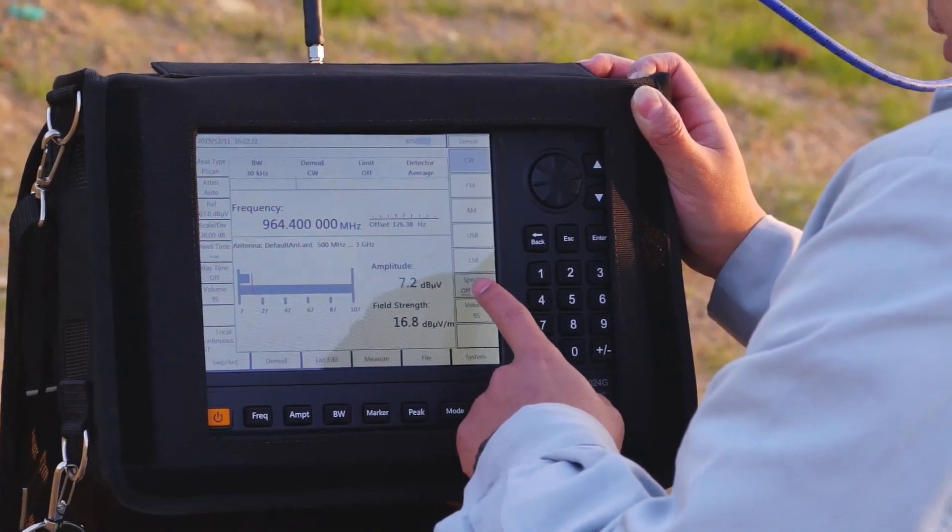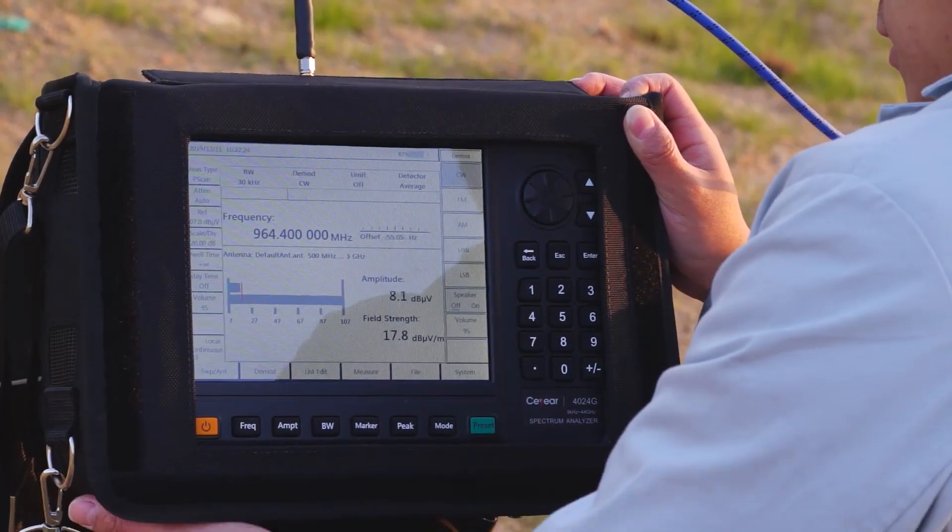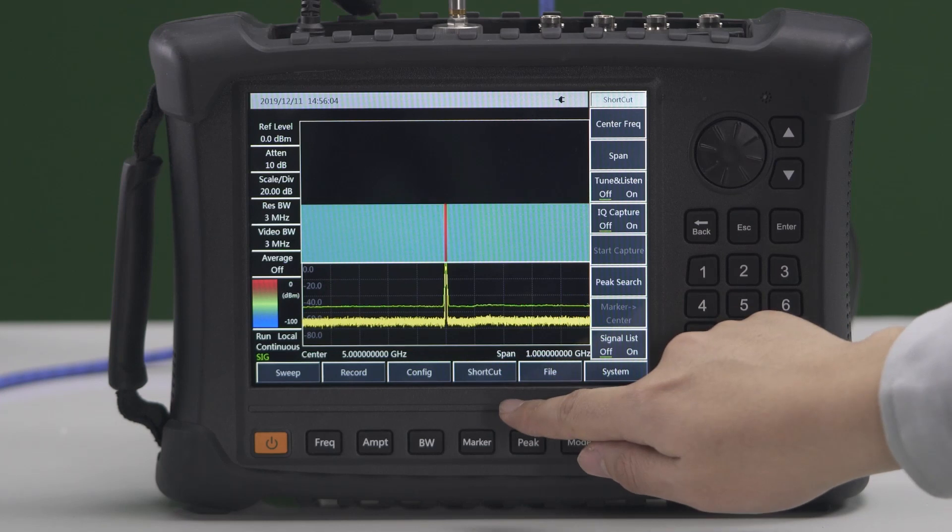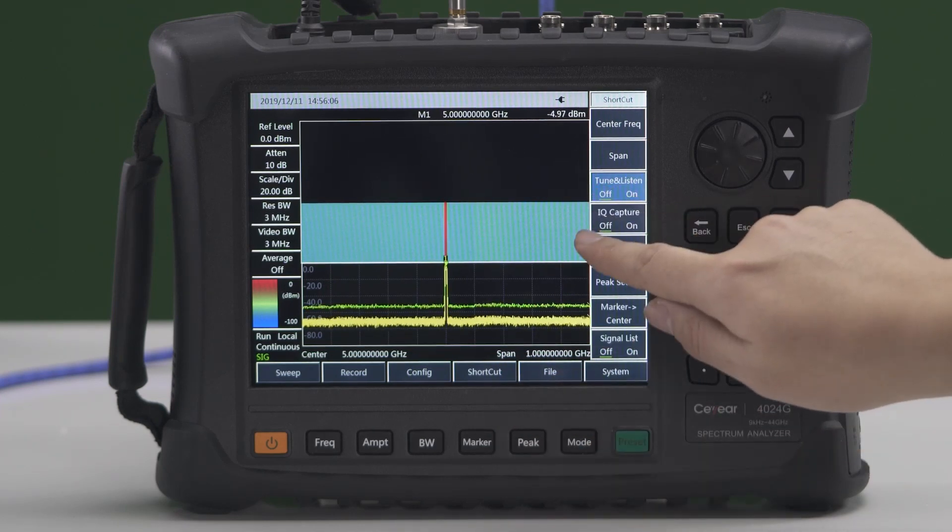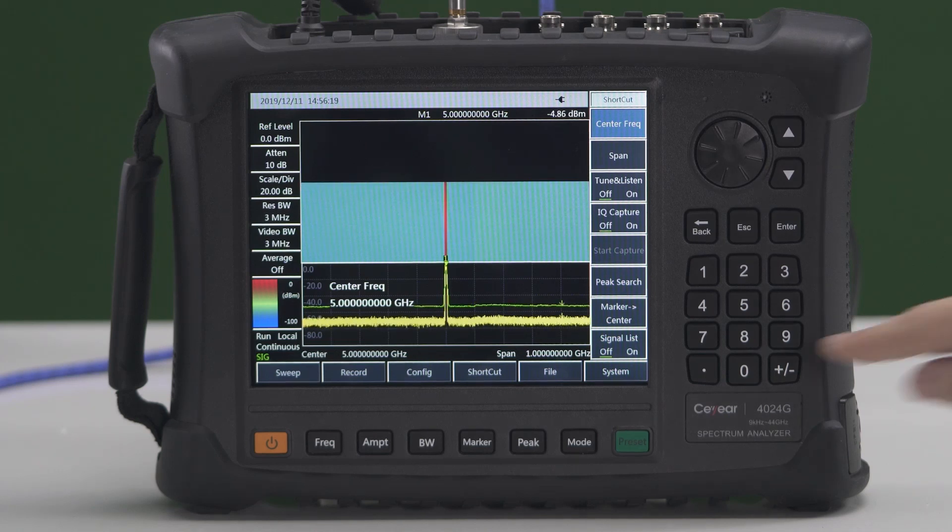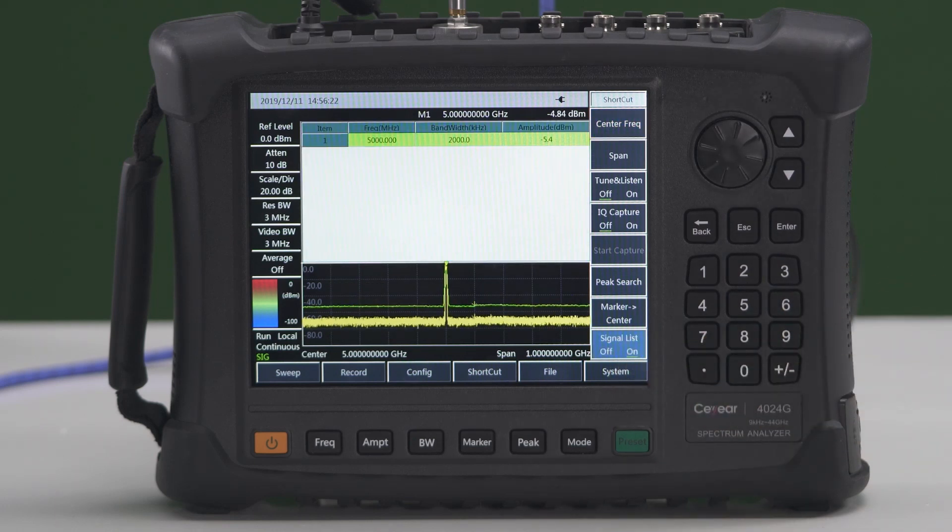In signal analyzer mode, C-Year 4024 provides fast analysis of interference signals. With the help of waterfall charts, historical data can be displayed and played back. Users can quickly modify configurations such as center frequency and span through the shortcut menu and quickly realize audio output and IQ capture functions. The signal list function can be used to view parameters of captured interference signals such as frequency, amplitude, and capture time.